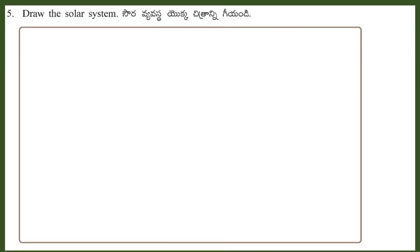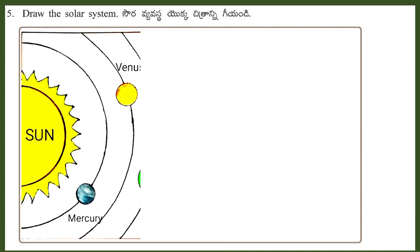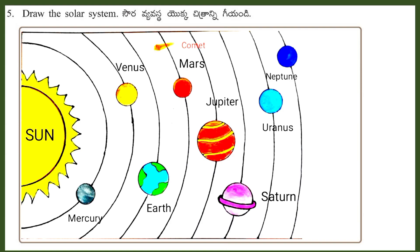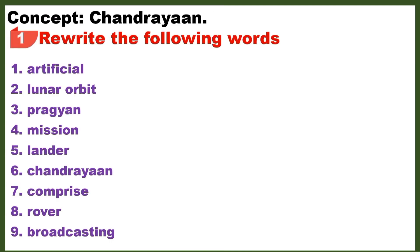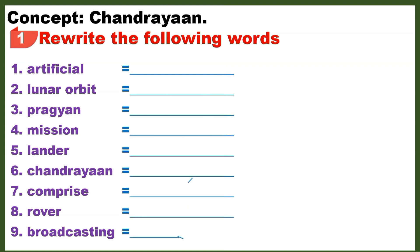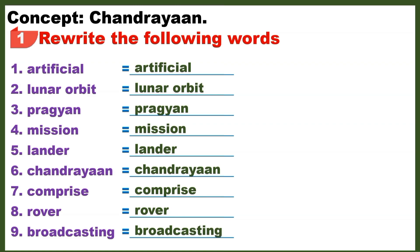Question 5: Draw the solar system. Worksheet 8 Concept: Chandrayaan. Section 1 - Rewrite the following words: Artificial, Lunar, Orbit, Pragyaan, Mission, Lander, Chandrayaan, Comprise, Rover, Broadcasting.